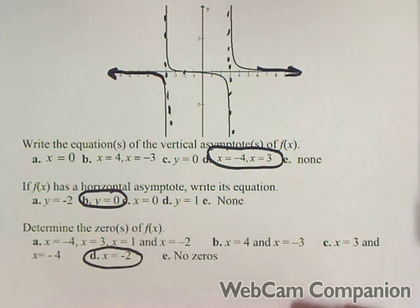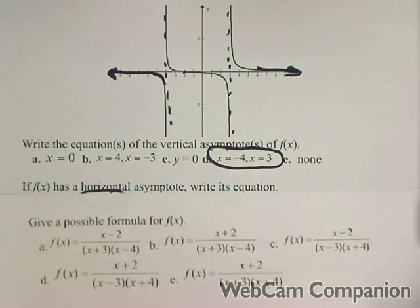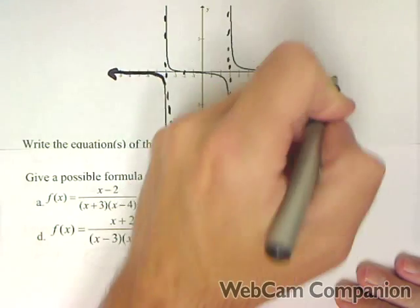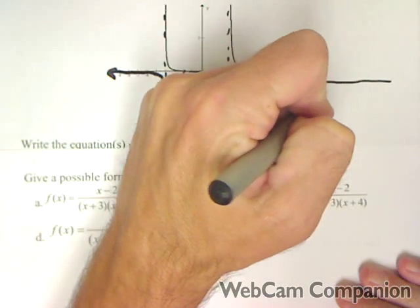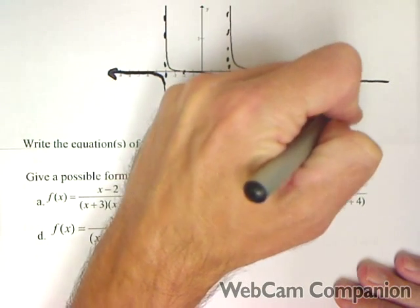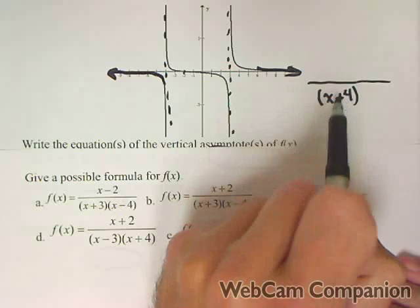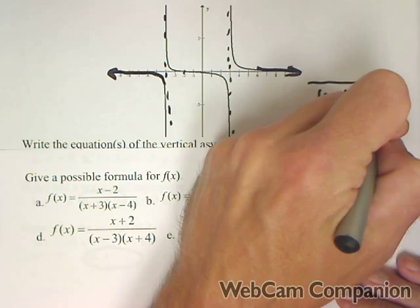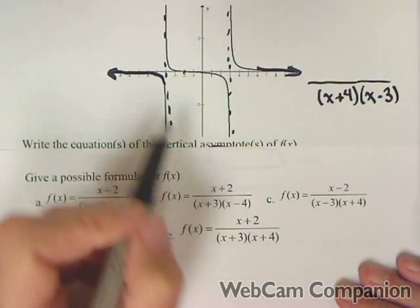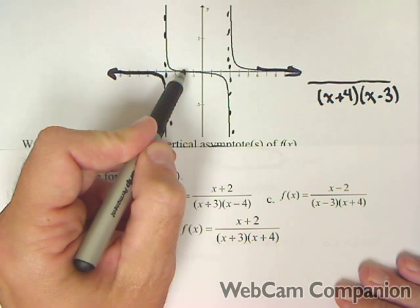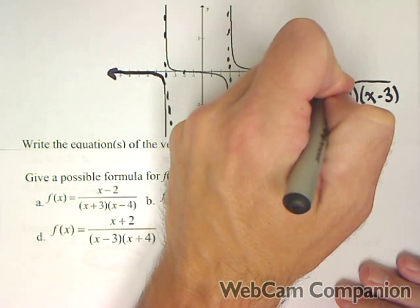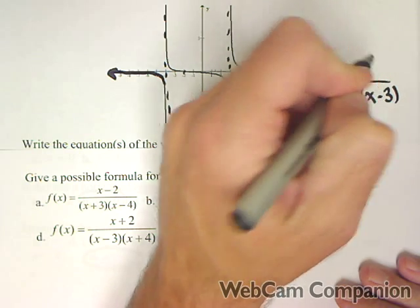Those are the characteristics of this rational function, and the next problem asks us to determine the equation. We know we have vertical asymptotes at negative four, so that means x plus four is a factor of the denominator, because negative four makes that zero. And also at three, so x minus three — that's our denominator. We also have a zero at negative two, which comes from the numerator. If negative two is a zero, then x plus two is a factor.